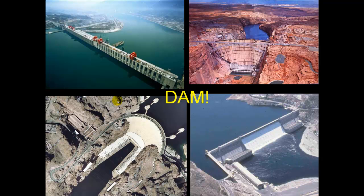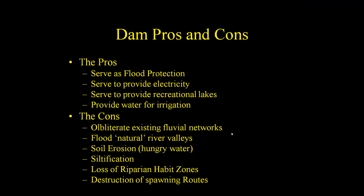Moving on to dams — a very controversial topic in the 1990s. Some of the larger dam projects in the world include the Three Gorges Dam in China, the Hoover Dam, and the Grand Coulee Dam on the Columbia River — very large projects supplying quite a bit of hydroelectric power. Dams do serve as flood protection, provide electricity, provide recreational lakes, and provide water for irrigation. The first purpose for constructing dams was to make reservoirs to divert water for irrigation, and this extends back thousands of years in human history.